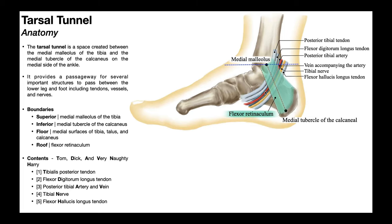We'll get to what those structures are in just a minute, but let's first talk about the boundaries of the tarsal tunnel. We've already hit the superior and inferior boundaries. The superior boundary is the medial malleolus of the tibia, and the inferior boundary is the medial tubercle of the calcaneus. These provide attachment points for the roof of the tarsal tunnel, which is this green-looking tissue called the flexor retinaculum.